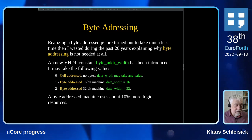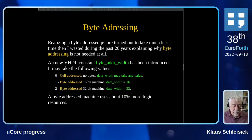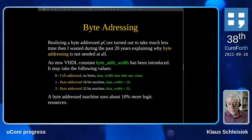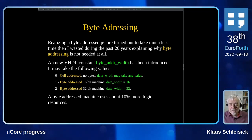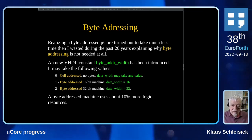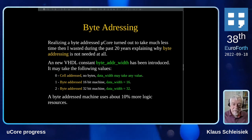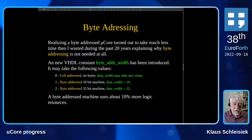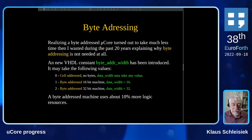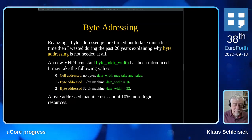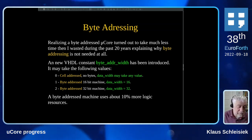As far as resource usage is concerned, a byte-addressed machine needs about 10 percent more logic. That is quite a bit given the functionality, but it involves a lot of multiplexing bytes through the four different positions in a 32-bit machine, and that just eats up logic cells. But it works.